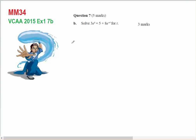Now because I've got 3e^t = 5 + 8e^(-t), because I have e^t and e^(-t), it's a disguised quadratic. And I'm going to multiply everything by e^t.